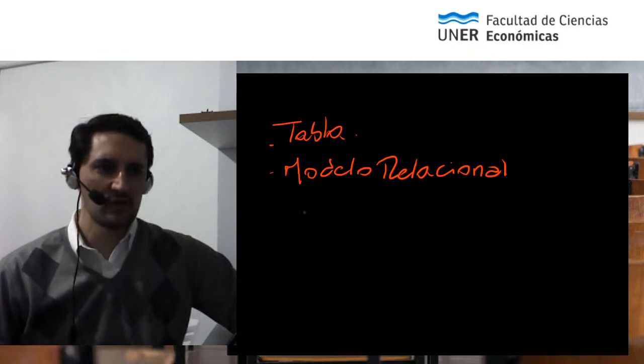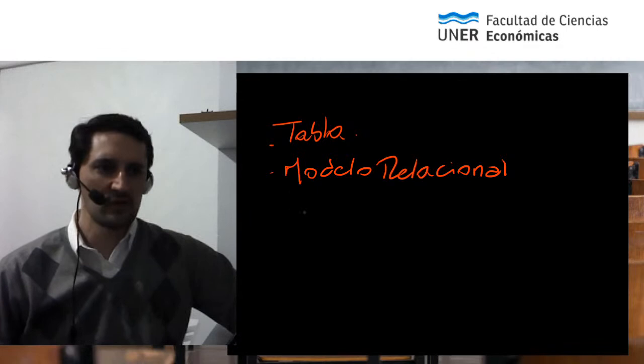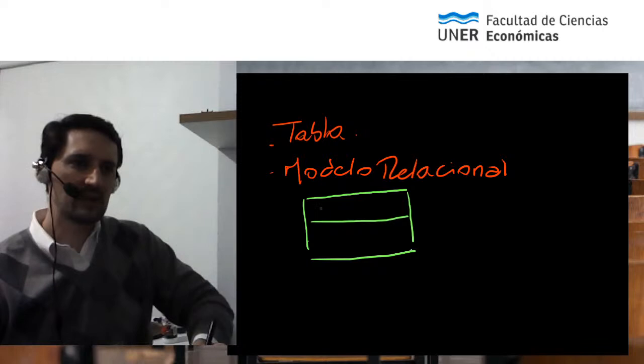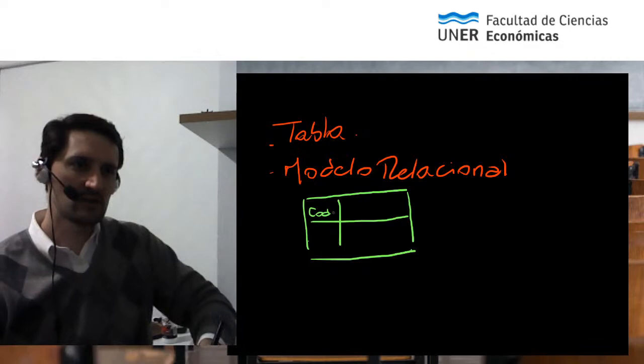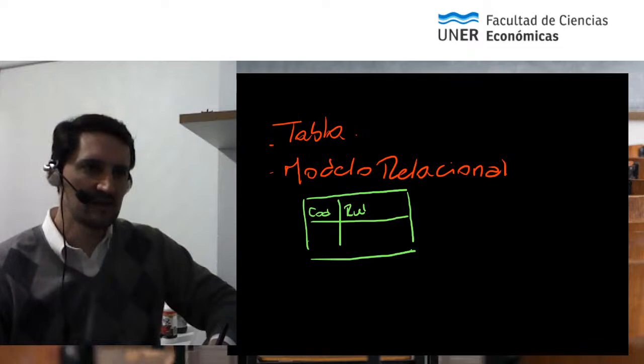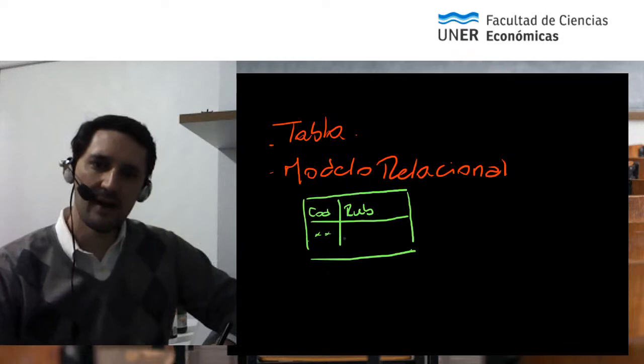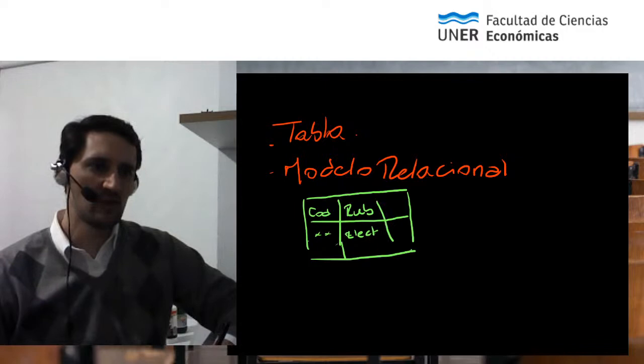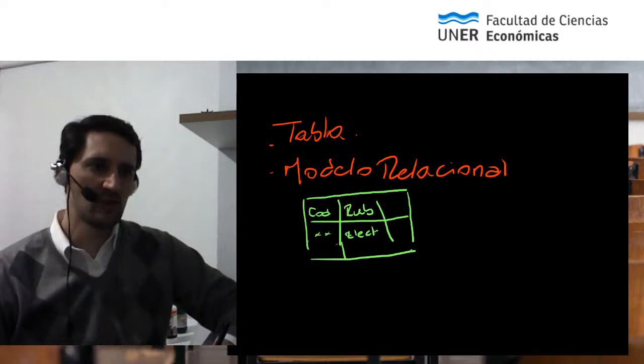Vamos a poner un ejemplo de modelo relacional de bases de datos. Supongan que nosotros tenemos una tabla donde vamos a registrar los rubros de venta que tiene una empresa. Estuvimos trabajando con Accountsoft, por ejemplo, con rubros. Evidentemente eso se registra en una tabla aunque no lo veamos. Entonces vamos a tener un código determinado, un rubro que va a ser, por ejemplo, electricidad, iluminación, y así sucesivamente para todos los registros que vayamos teniendo.